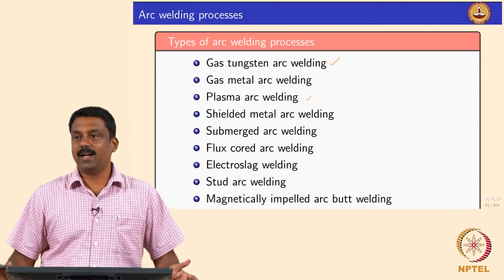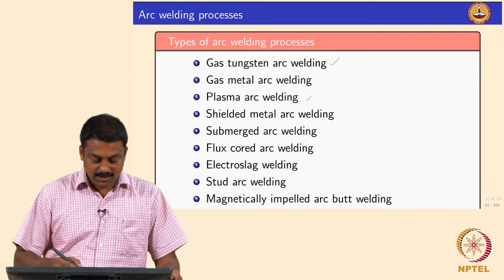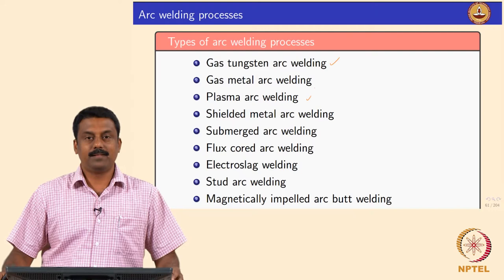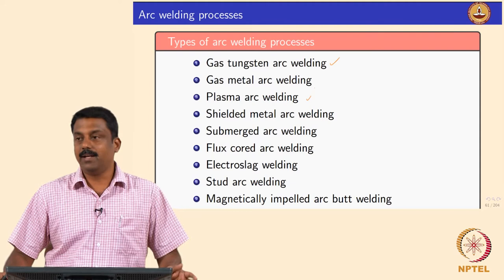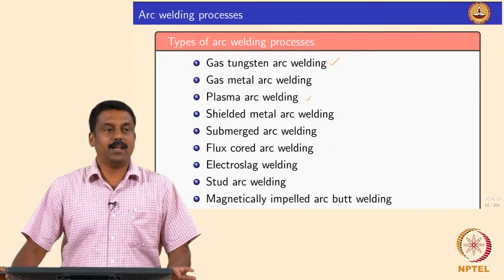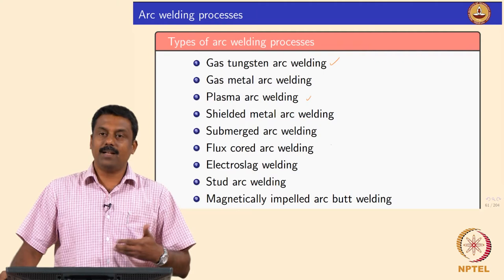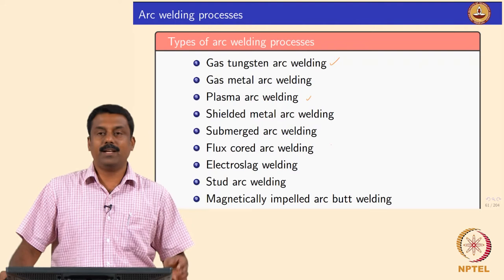By converting the arc into plasma, it becomes a plasma beam power source with higher energy density. Other welding processes change the strategy of transferring heat from the arc — for example, shielded metal arc welding, submerged arc welding, flux cored arc welding, or electroslag welding. In these processes the heat source is still the arc, but how you transfer that heat from the electrode to the base material is different.